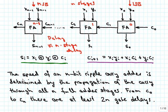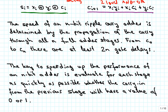The speed of this n-bit ripple adder is determined by the propagation of the carry through all the adder stages. From c0 at the input up to cn at the output, we have at least 2n gate delays looking at how the carry for the next stage is being computed. This could be implemented as a two-level AND-OR circuit, and that gives us the 2n gate delays. The key to speeding up the performance of an n-bit adder is to evaluate for each stage as quickly as possible whether the carry-in from the previous stage will have a value of 0 or 1.